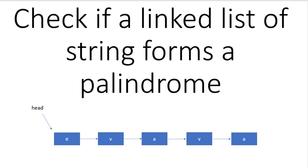Hey guys, welcome to Coding Simplified. We'll solve a new problem in linked list. We are given a string and we need to check whether this string is a palindrome or not. The difference is that this string is formed as a linked list, with each character in a single node. So if my string is 'evave', I have e, v, a, v, and a as individual nodes.